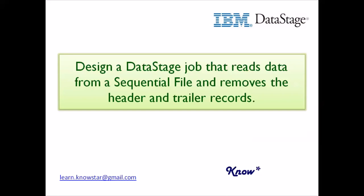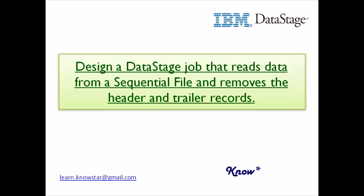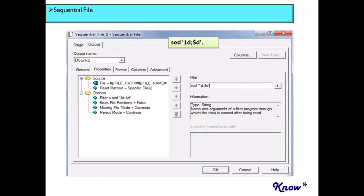The requirement is to read the data records from the input file, but there are also header and trailer records that we need to skip. We want to implement a logic that would remove those header and trailer records and only read the data records from the source input file. A question that might be asked would be: design a DataStage job that reads data from a sequential file and removes the header and trailer records. So we need to use a sequential file stage for this purpose.